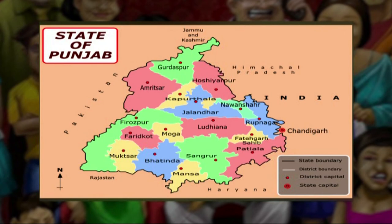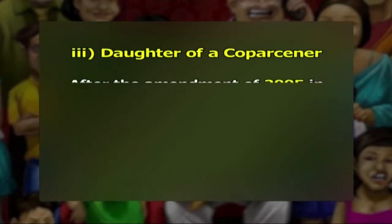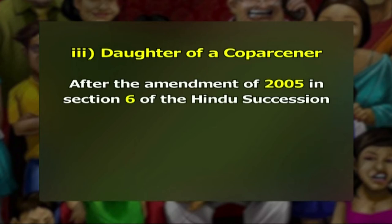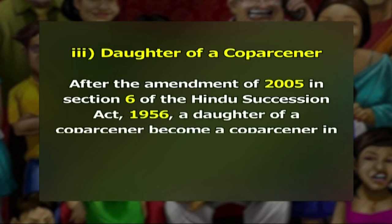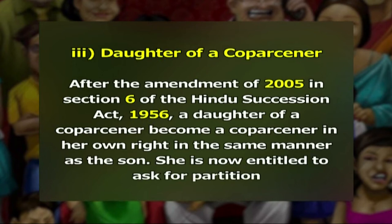However, in Punjab under customary law, no son can demand partition as he has no right by birth in co-parsenery property. Similarly, in Maharashtra and Gujarat, a son is not entitled to demand partition from his father if the father is living with his own father, brother, or other co-parseners. After the 2005 amendment to Section 6 of the Hindu Succession Act 1956, a daughter of a co-parsener became a co-parsener in her own right in the same manner as a son. She is now entitled to ask for partition and has a right to claim partition in the joint family property, receiving an equal share as that of a collateral son of her father.